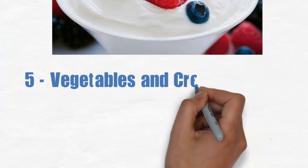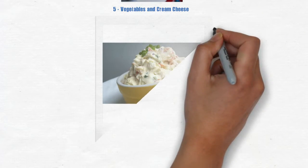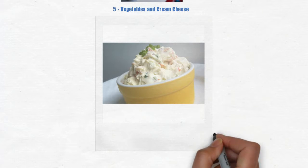5. Vegetables and cream cheese. Cream cheese is high in protein and delicious. When matched with healthy vegetables, it makes for a great snack. It's a great way to increase your raw veggie intake because it's so yummy.